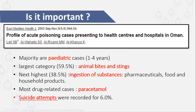What is the issue in Oman? We do have this issue. This is a retrospective study done in our local health centers — 45 of them — to determine the pattern of toxicity. The majority of cases, as expected, is the pediatric age group. The largest category was animal bites and stings, related to our environment. Ingestion of substances is the next highest, including food, medication, and household products. The most related cases was paracetamol, and we have a significant number of suicidal cases, about 6%. This is from 2003, and you can imagine the situation is much worse and the problem much bigger nowadays.